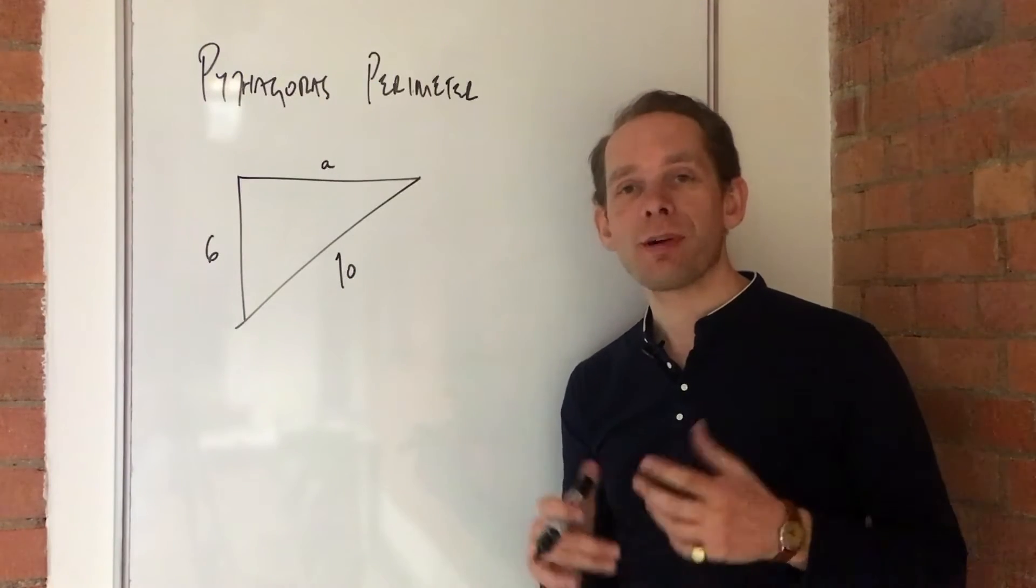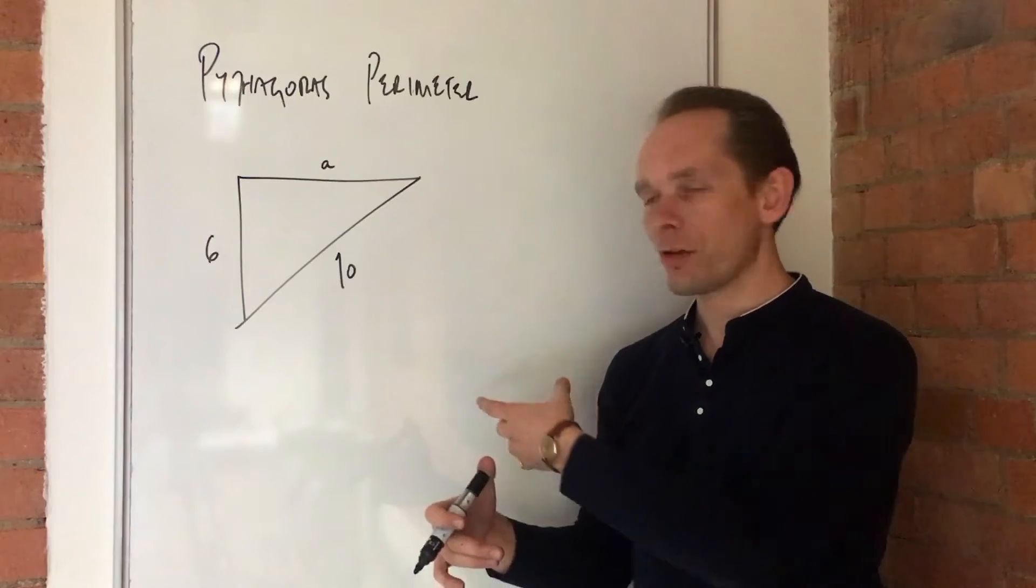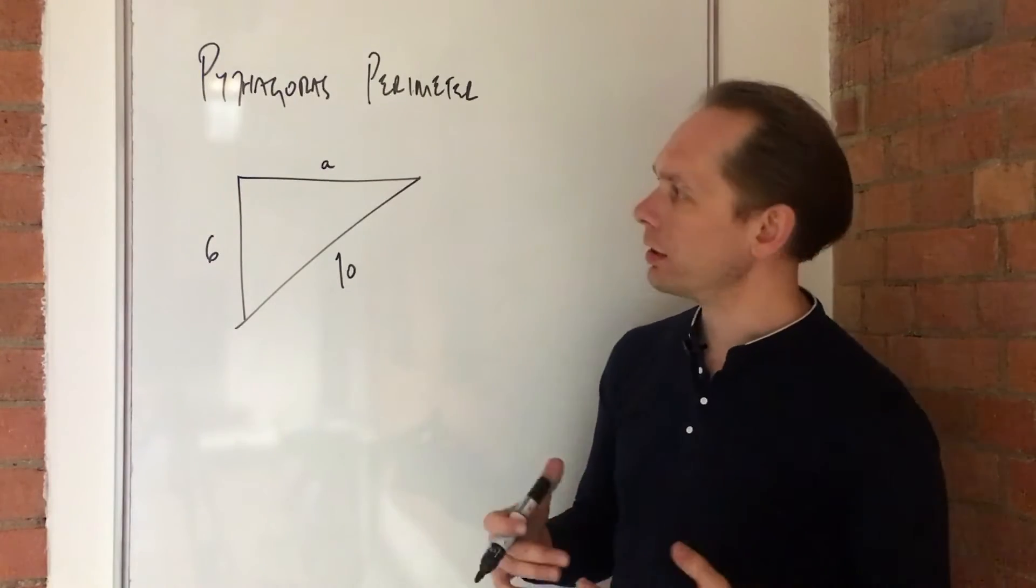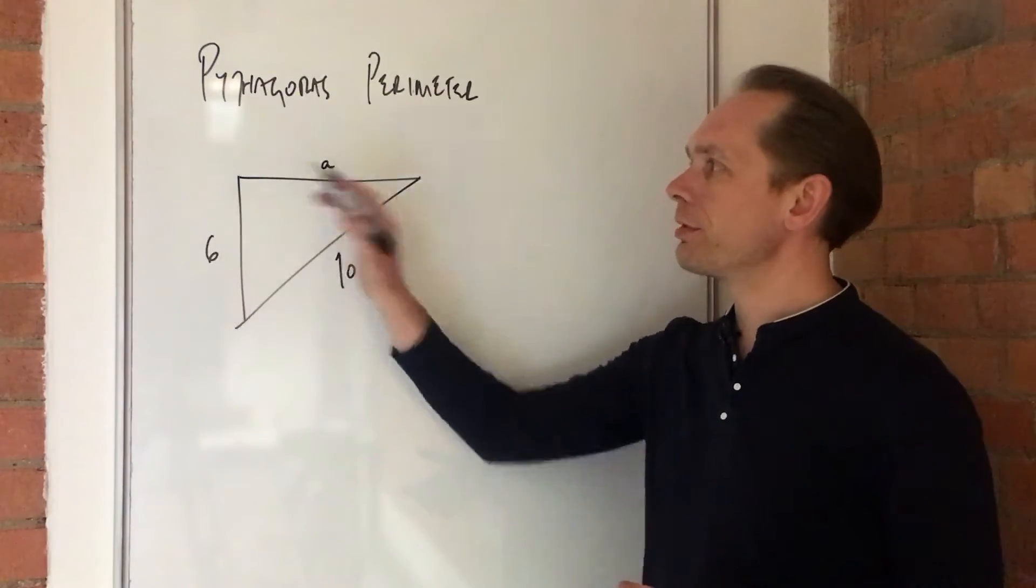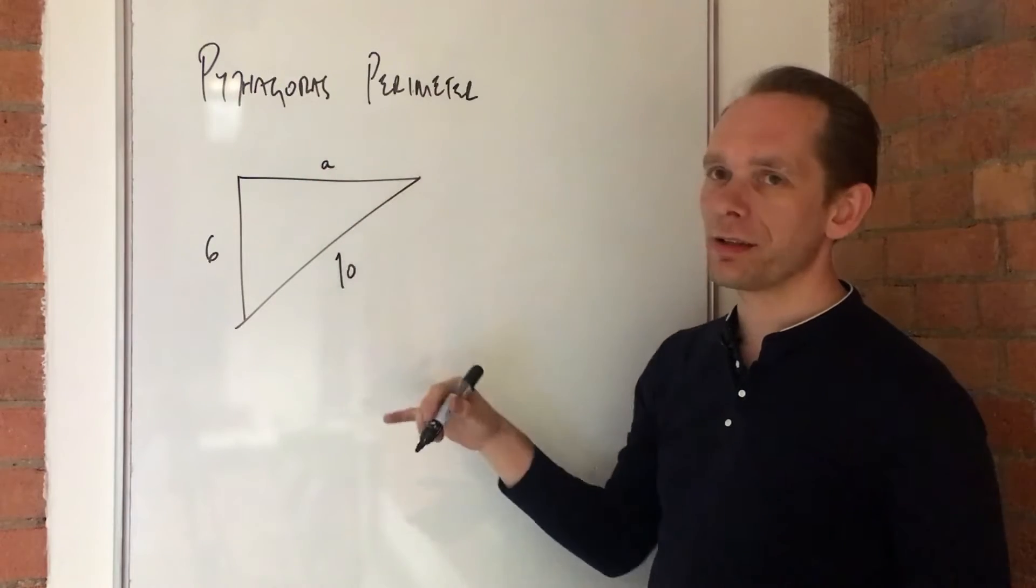Hello. In this video, we're using Pythagoras' Theorem to solve a pretty simple question about a triangle. We're asked here for the perimeter of this triangle, but you'll notice one of these sides is unknown.